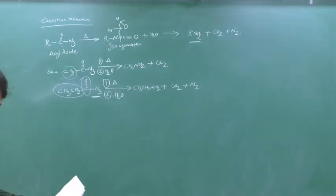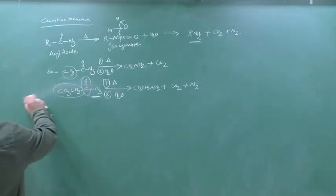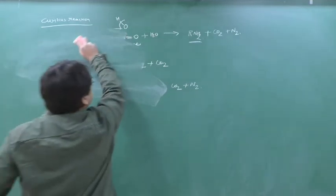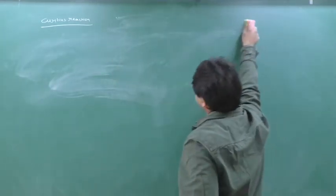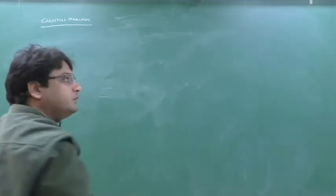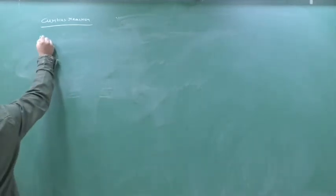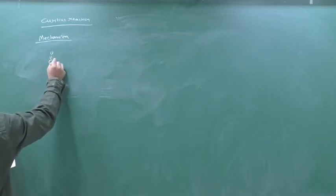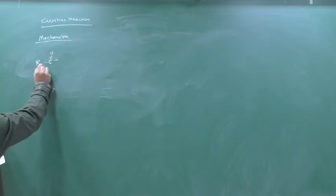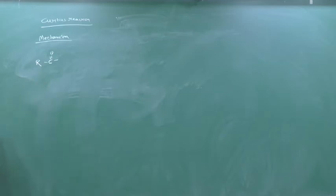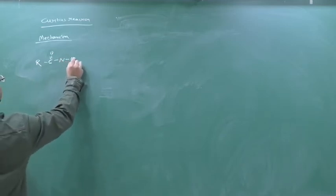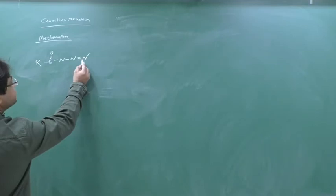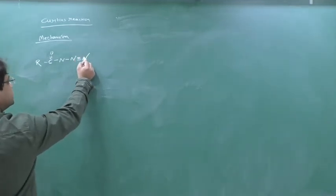Now we will see the mechanism of the Curtius reaction. We take R–C(=O)–N₃, but see how I write the azide: N–N≡N. Nitrogen can make a maximum of three bonds. Here one nitrogen has made three bonds — stable. But this middle nitrogen has made four bonds, so it would have donated its lone pair, creating a positive charge. The nitrogen accepting the lone pair gets a negative charge.